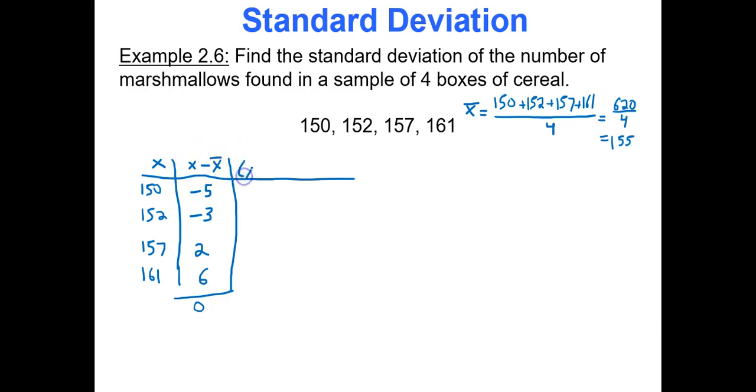The next part of the formula is to take each of these deviations or differences and square them. Square negative 5 to get 25—squaring negative numbers makes them positive. Square negative 3 to get 9, square 2 to get 4, and square 6 to get 36. Remember the formula: standard deviation is the square root of the sum of the squared deviations divided by n minus 1. What do these squared deviations add up to? They add up to 74.